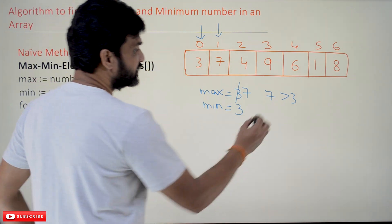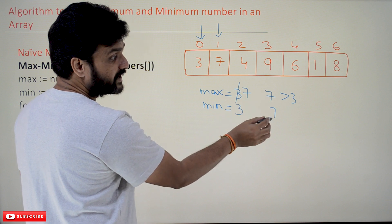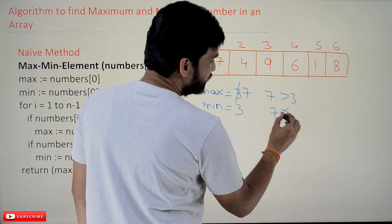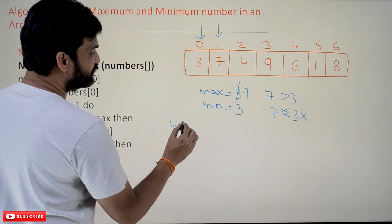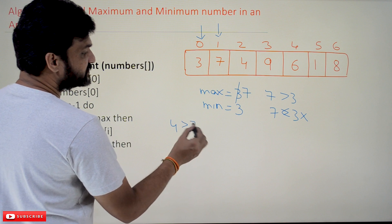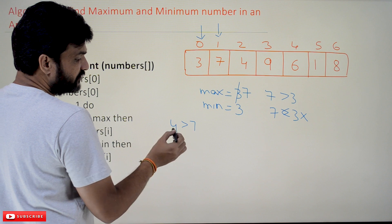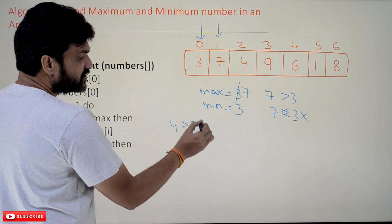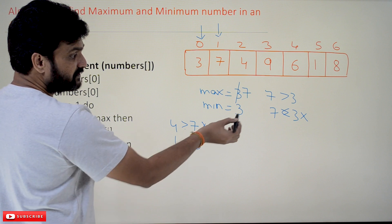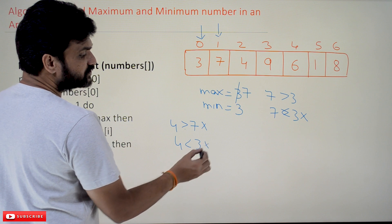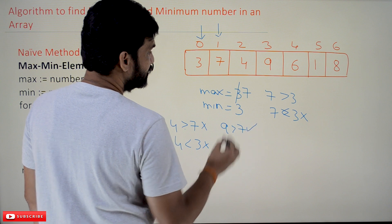In the same iteration we do both comparisons. Is 7 less than 3? No, it is not true. Next we compare 4: is 4 greater than 7 (the existing maximum)? No, it is not true. And next, is 4 less than 3 (the minimum element)? No, it is not true.